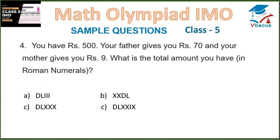Question 4: You have rupees 500, your father gives you rupees 70, and your mother gives you rupees 9. What is the total amount you have, written in Roman numerals? As we know, 500 is equal to D, 70 is equal to L (50) plus XX (20), and 9 is IX. So, your answer will be DLXXIX.